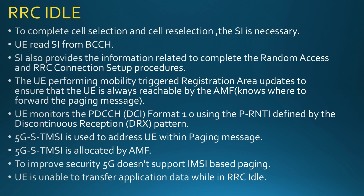Now let's go through all three states one by one, starting with RRC Idle. When the UE is in RRC Idle, to complete cell selection and cell reselection, system information is necessary. That system information is read from BCCH, and it also provides information needed to complete the RACH process and the RRC connection setup process.